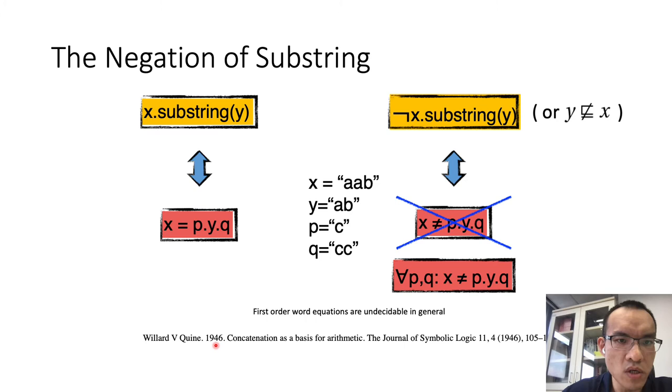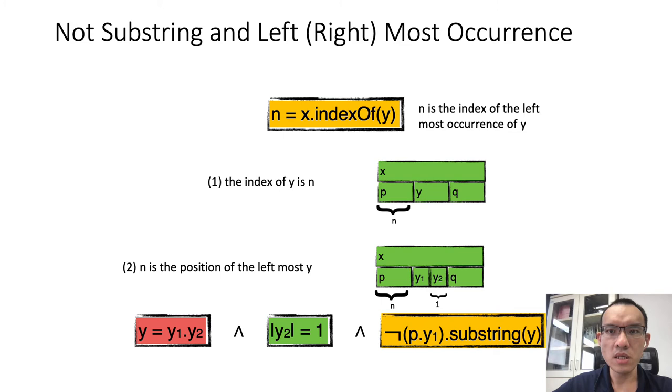Not-substring constraints are important in expressing many string functions in programming languages, in particular to encode the left or right-most occurrences. For example, indexOf is a very common string function. It says that n is the index of the left-most occurrence of Y in X.